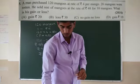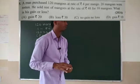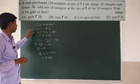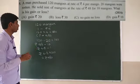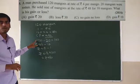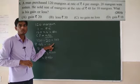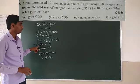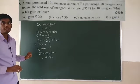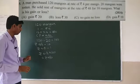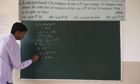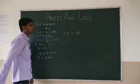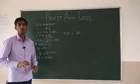What is his gain or loss? He bought 120 mangoes at Rs 4 each, so cost price is Rs 480. 20 mangoes were rotten, leaving 100. He sold 100 mangoes for Rs 480. So our cost price and selling price are both Rs 480. Therefore, there is no gain and no loss in this transaction.